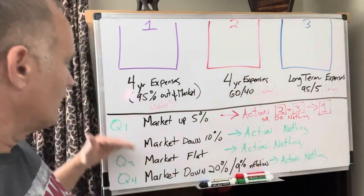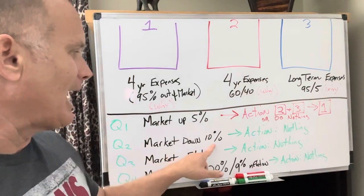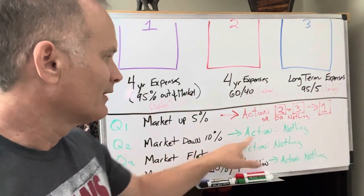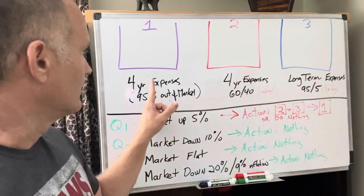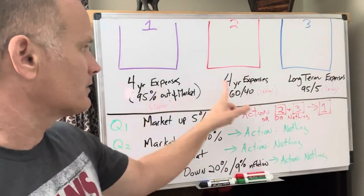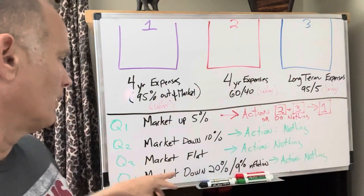So then you go to the next quarter and the market's down 10%. Do nothing. You're using bucket one for its purpose. These are down just a little bit. Do nothing.